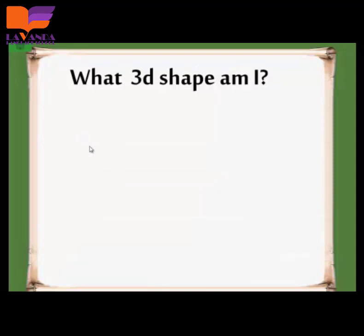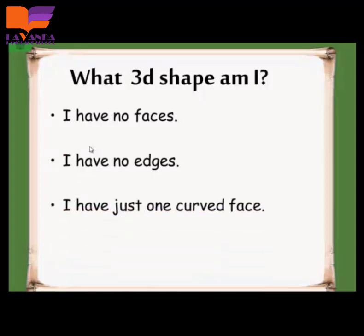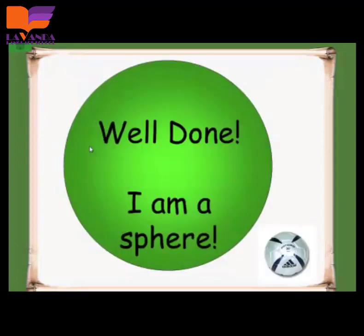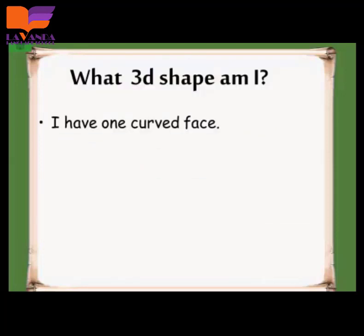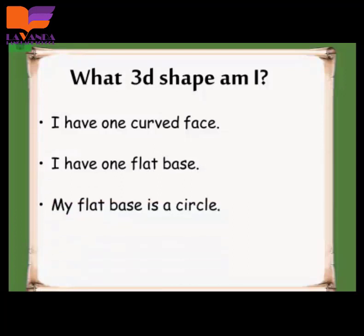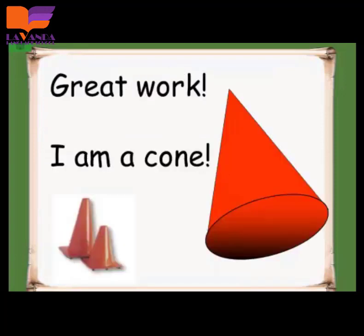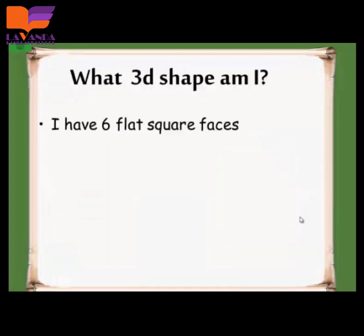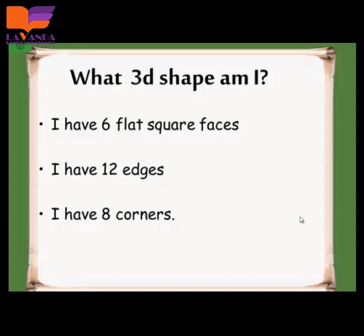Let's solve some questions. I have no faces and no edges — I just have 1 curved face. I am a sphere. I have 1 curved face and 1 flat base, and my flat base looks like a circle — I am a cone. I have 6 flat square faces, 12 edges, and 8 corners. If the problem didn't mention that the faces are square, I could get confused between a rectangular prism and a cube, but only the cube has square faces — so I am a cube.